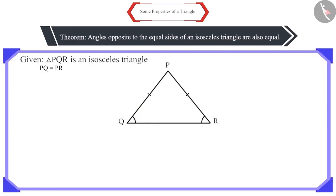And we have to prove that angle Q is equal to angle R. Let's look at its argument. Draw the bisector of angle P, which intersects the side QR at point T.